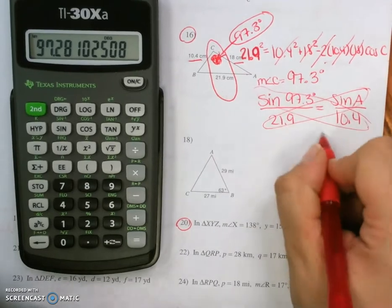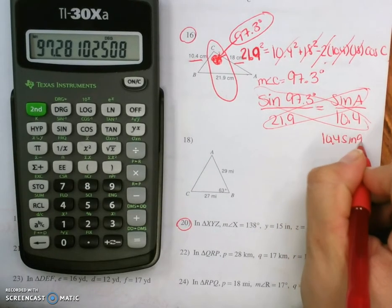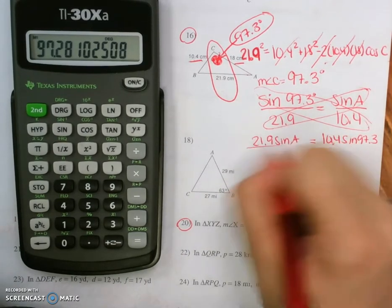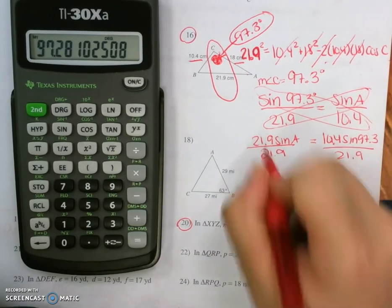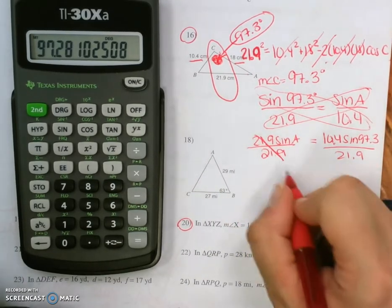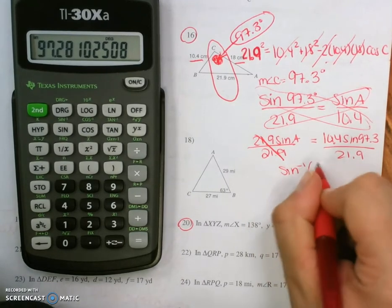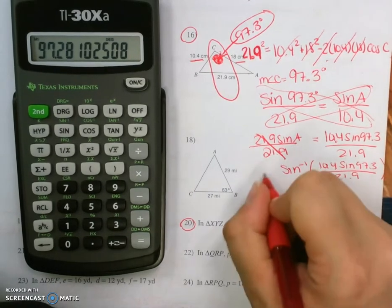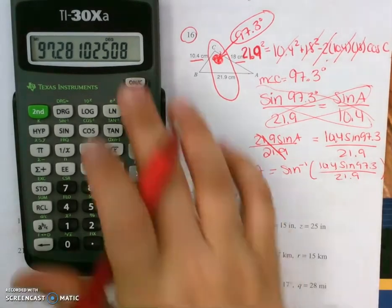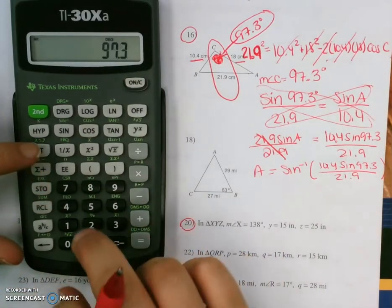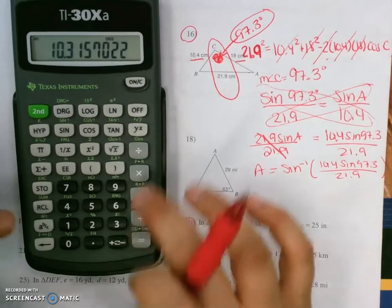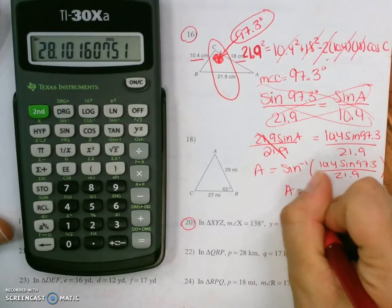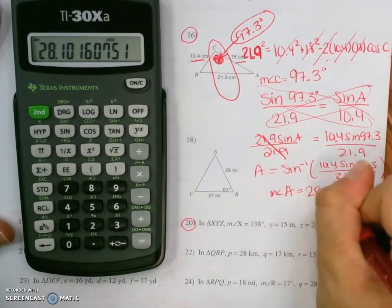Cross products and solve. 10.4 times sine of 97.3 equals 21.9 times sine a. Divide by 21.9 on both sides. And then sine a equals all of that. We take the inverse. So 97.3 sine times 10.4 equals, divided by 21.9 equals, second sine, and angle a is 28.1 degrees.